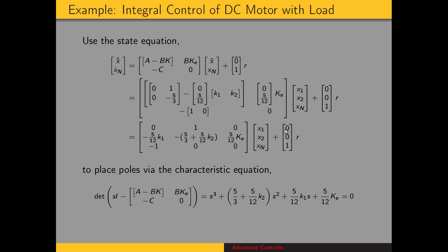Now we're going to use this to place the poles of our system via the characteristic equation. The characteristic equation is the determinant of sI minus the state matrix. Computing the determinant, we get s cubed plus a term times s squared plus a term times s plus a term, equal to 0. It's the same process as designing controllers using pole placement without integral control — we find our desired characteristic equation and set the coefficients equal to compute our gains.